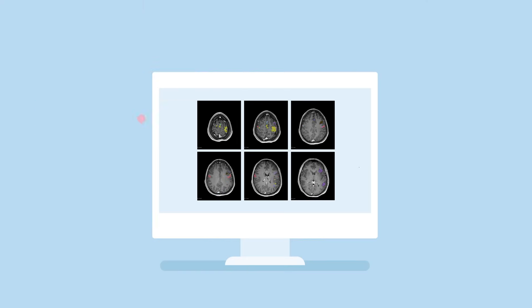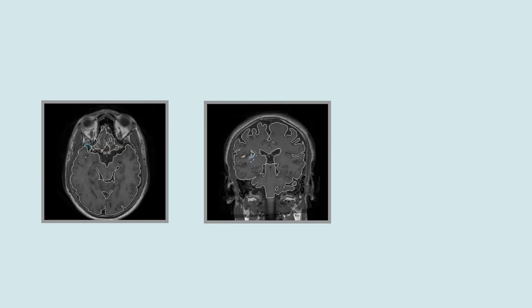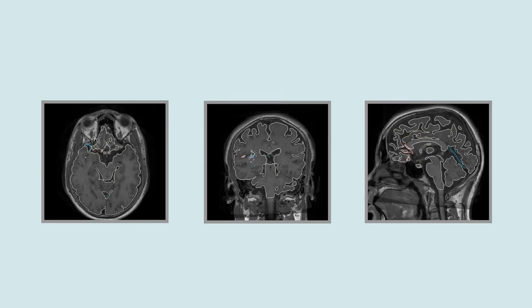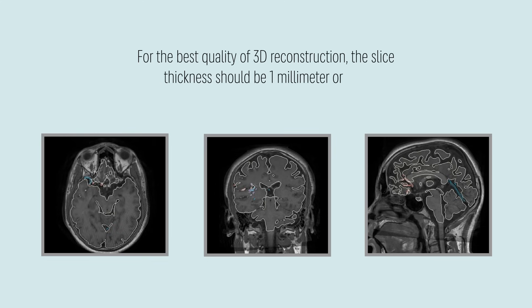So, how does the system work? The first step is to export the individual medical scans to a computer, where they can be incorporated into 3D images. The files are in a standard format called Digital Imaging and Communications in Medicine, or DICOM, and can come from a variety of imaging modalities, including MRI and CT. Each image represents a cross-sectional slice of the body that encompasses a certain amount of tissue. For the best quality of 3D reconstruction, the slice thickness should be one millimeter or less.